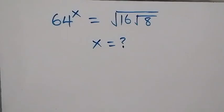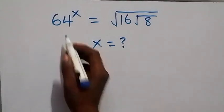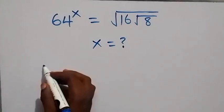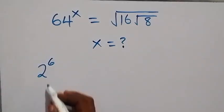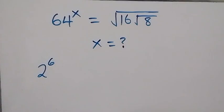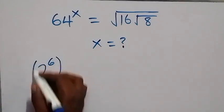Hello, you are welcome. How to solve this nice math problem: we have 64 raised to power x equals square root of 16 times square root of 8. We can write 64 as 2 raised to power 6, since 2 multiplied by itself 6 times gives us 64. So we have 2 raised to power 6, then raised to power x.